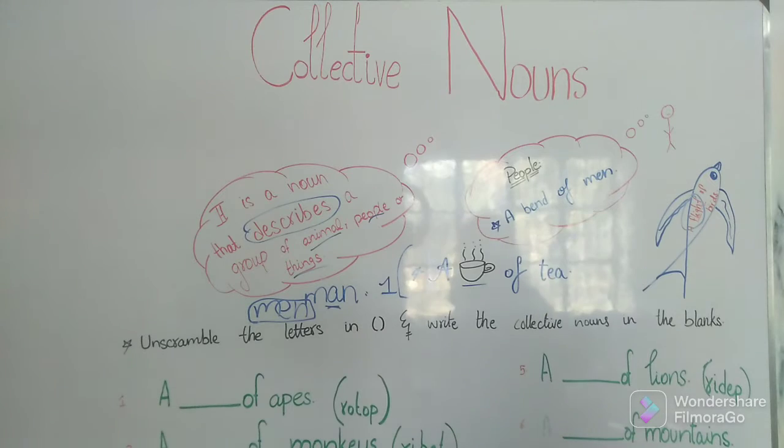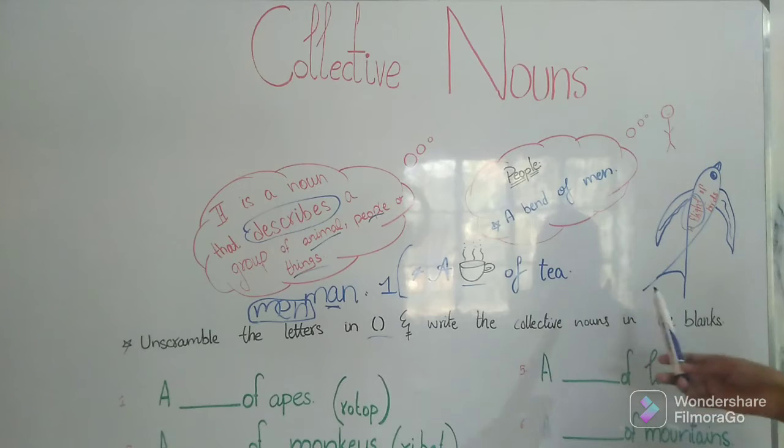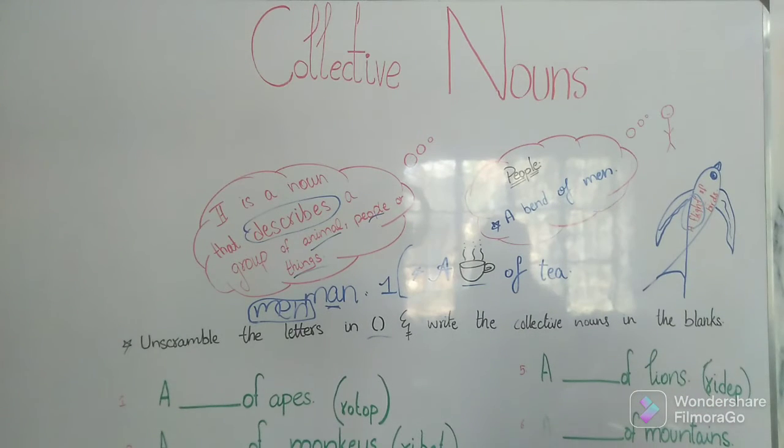Alright, so now let's read this sentence. What are they saying? Unscramble the letters in brackets. The brackets would be there and write the collective nouns in the blanks. Now what there would be - there would be fill in the blanks type statements. And we have to choose what will go there, appropriate words. But they have given us brackets. So what we have to do is arrange those letters, and then we are going to put them in the blanks.